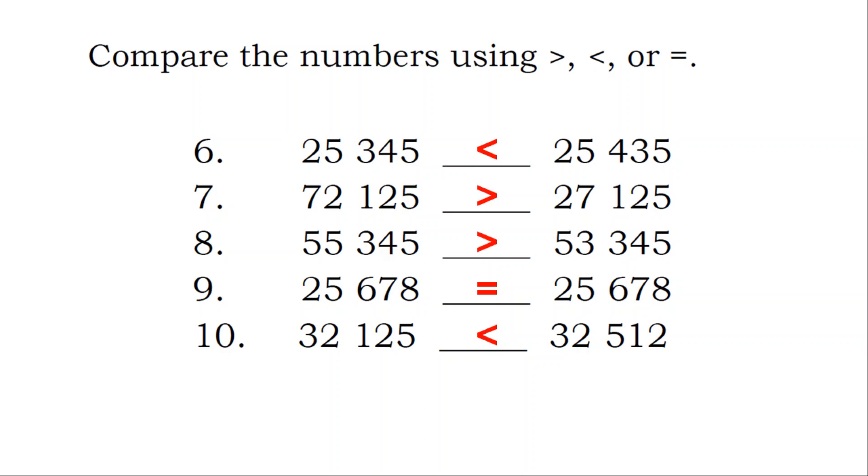7. 72,125 is greater than 27,125. 8. 55,345 is greater than 53,345. 9. 25,678 is equal to 25,678.